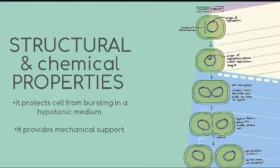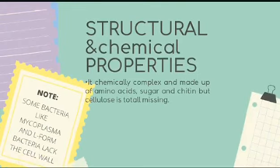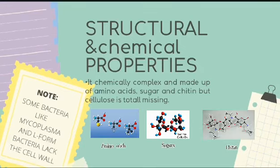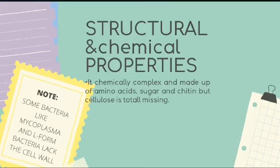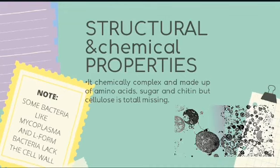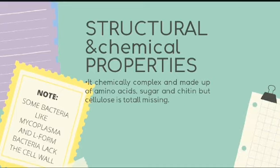The cell wall also provides mechanical support that enables the cell to carry on essential functions like cell division. Bacteria is a single-cellular organism and it generally divides by simple binary fission. The cell wall of bacteria is chemically complex and is made up of amino acids, sugars, and chitin, but cellulose is totally missing. It is also to be noted that some bacteria like Mycoplasma and alpha bacteria do not have a cell wall.